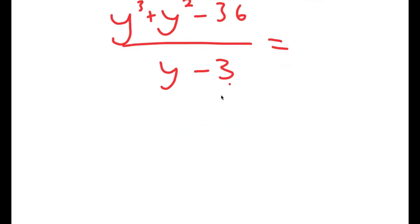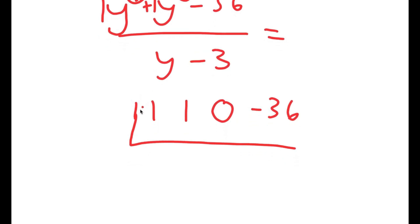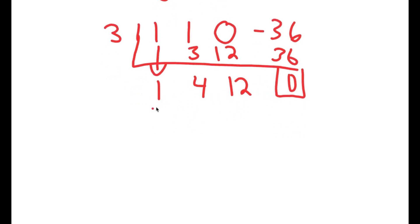To divide these I'll use synthetic division. The coefficients of the numerator are 1, 1, 0 — we include 0 because we're missing the y to the power of 1 term — and then negative 36. The denominator gives us 3. Dropping down 1: 3 times 1 is 3; 1 plus 3 is 4; 3 times 4 is 12; 0 plus 12 is 12; 3 times 12 is 36; negative 36 plus 36 is 0. So the remainder is 0, and the resulting coefficients form the quotient.